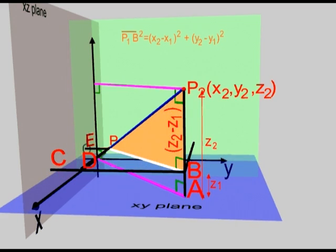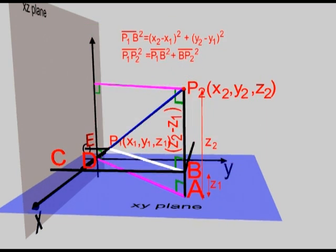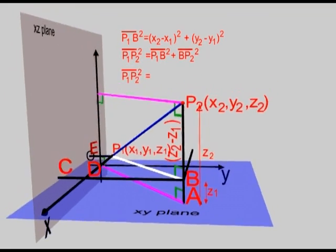Now, consider the right angle triangle P1BP2. By Pythagoras theorem, P1P2 squared is equal to P1B squared plus BP2 squared. Substitute for the value of P1B squared.